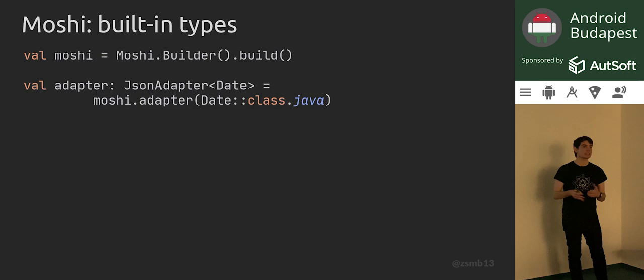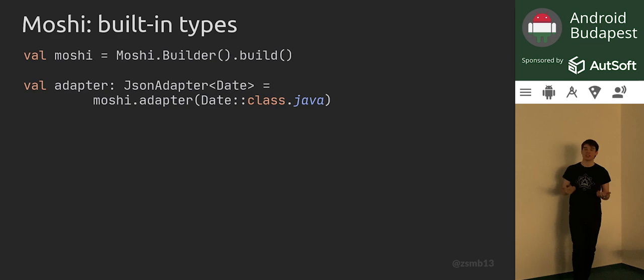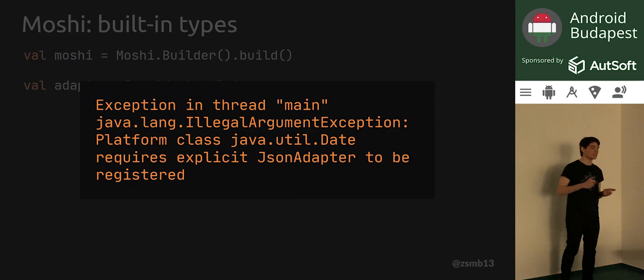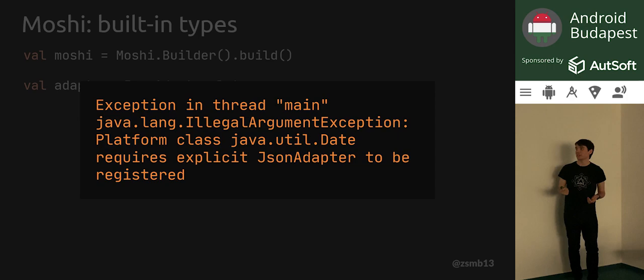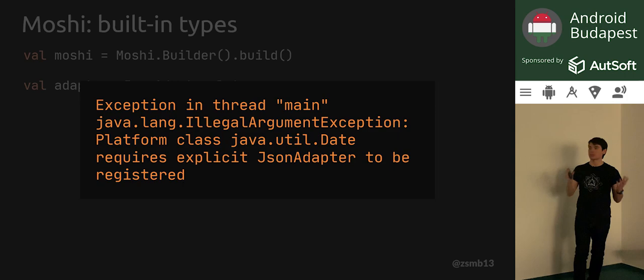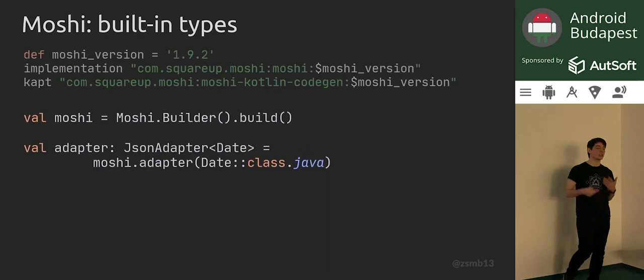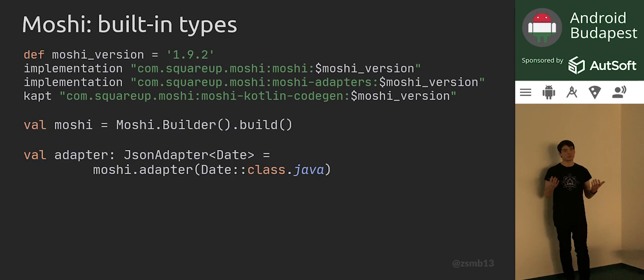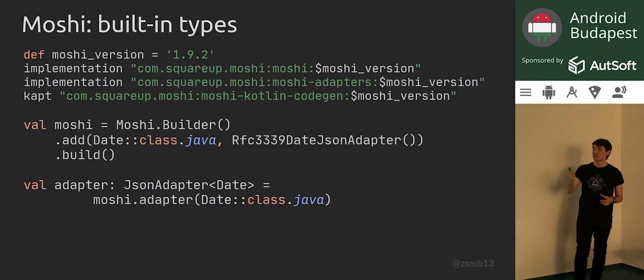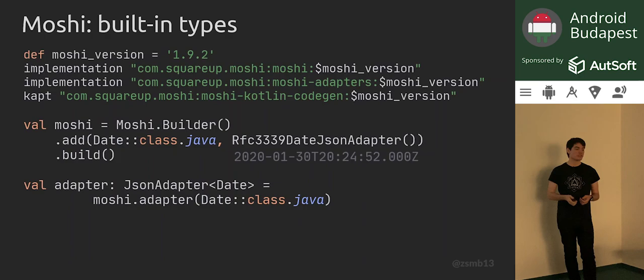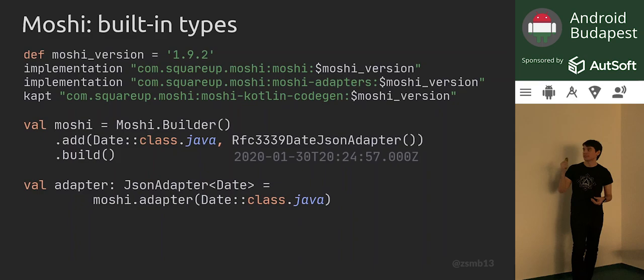Let's see all the pitfalls we saw with GSON and see what Moshi can do about them. If we ask Moshi to serialize a Date by getting an adapter for the Date class, Moshi will throw an exception telling you that platform class java.util.Date cannot be serialized without a custom JSON adapter. So Moshi by default doesn't have a parsing method for dates. This may seem tedious, but thankfully there's a moshi-adapters artifact which contains basic adapters — for example, the very aptly named Rfc3339DateJsonAdapter, which gives you a proper date string that you'd want to see in API calls.